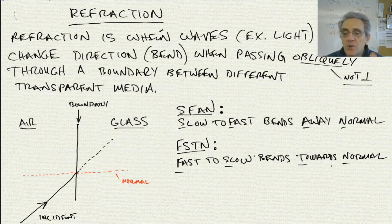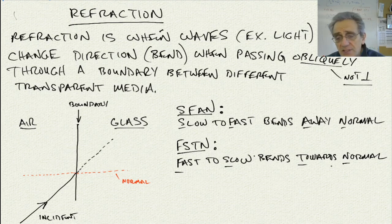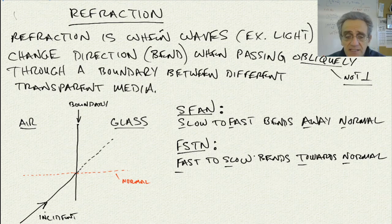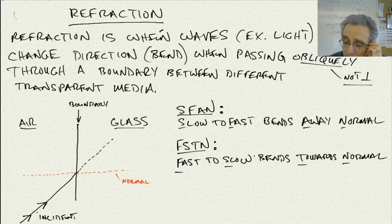The question we need to ask ourselves is which situation applies here. This arrow is extremely important because it tells us the direction the light is traveling — it's traveling from the air to the glass.